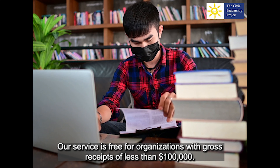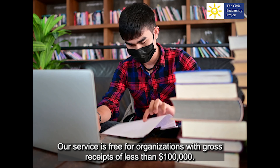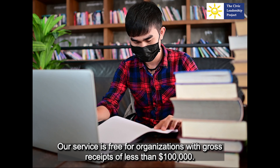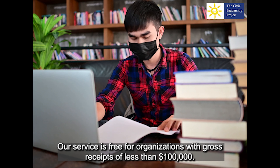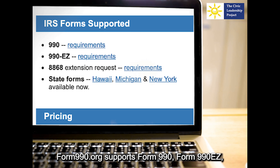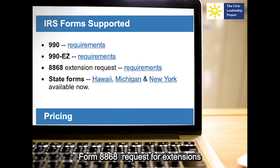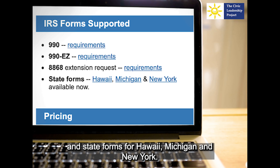Our service is free for organizations with gross receipts of less than $100,000. Form 990.org supports Form 990, Form 990-EZ, Form 8868 Request for Extensions, and state forms for Hawaii, Michigan, and New York.